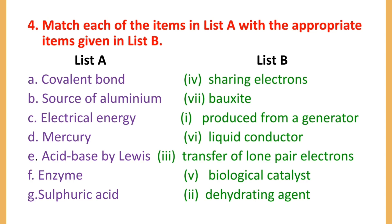Let's recap: Covalent bond — sharing electrons. Source of aluminium — bauxite. Electrical energy — produced from a generator. Mercury — liquid conductor. Acid-base by Lewis — transfer of electrons. Enzyme — biological catalyst. Sulfuric acid — dehydrating agent.